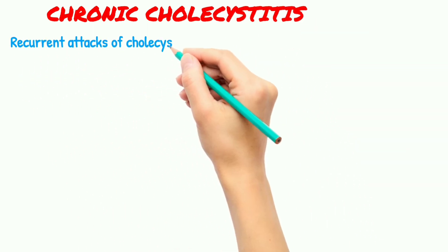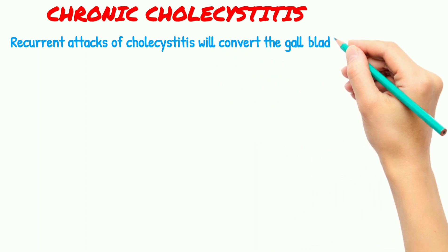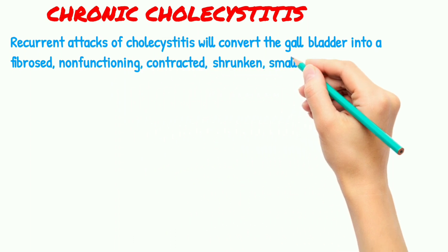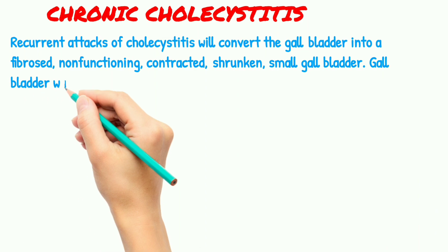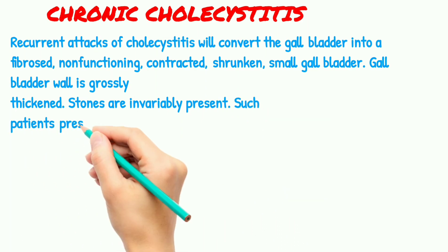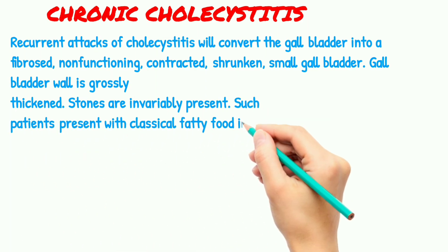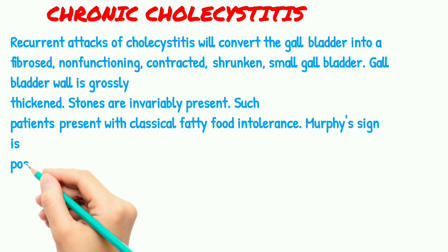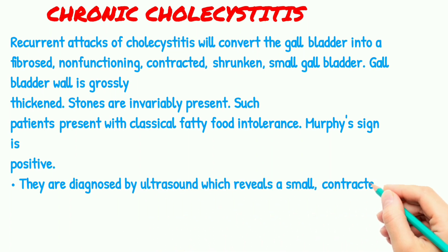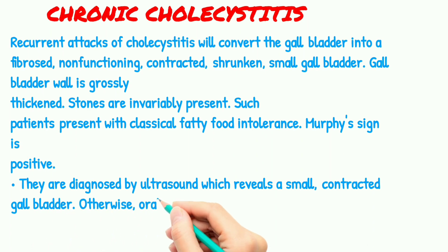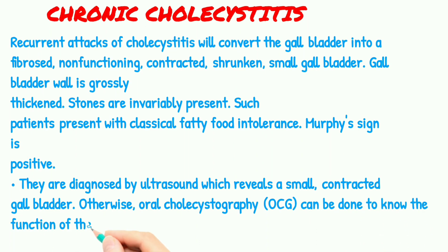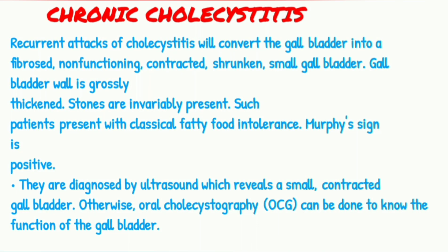Chronic cholecystitis: recurrent attacks convert the gallbladder into a fibrosed, non-functioning, contracted, shrunken small gallbladder. The gallbladder wall is grossly thickened and stones are invariably present. Such patients present with classical fatty food intolerance and Murphy's sign is positive. They are diagnosed by ultrasound, which reveals a small contracted gallbladder, or by oral cholecystography (OCG), which can be done to know the function of the gallbladder.